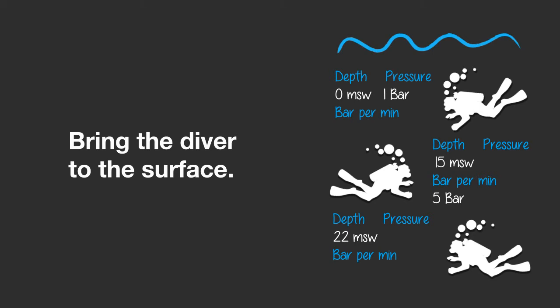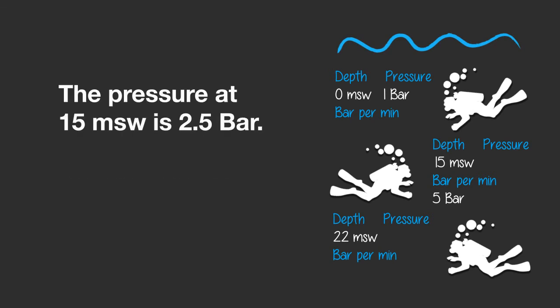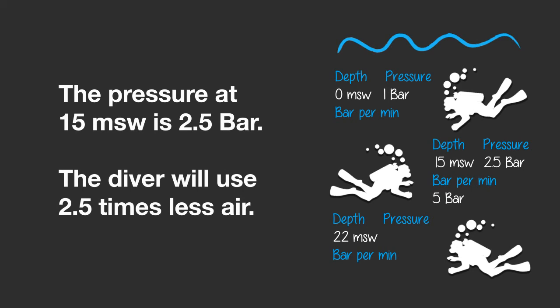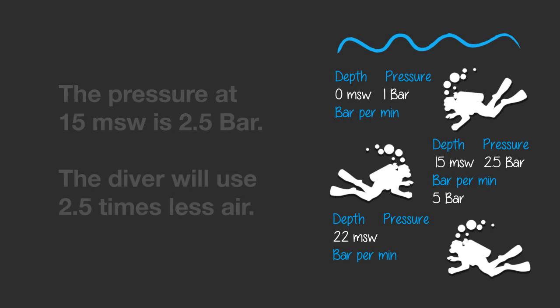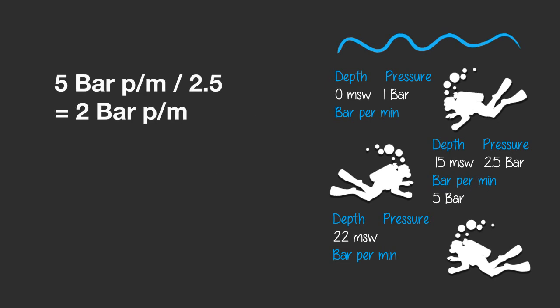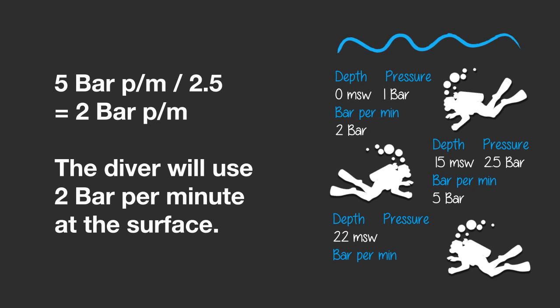First, like the balloon, we bring the diver to the surface and find out how many bar per minute he breathes there. To do this we need to know the pressure at 15 metres of seawater, which is 2.5 bar — 15 divided by 10 plus 1. The diver will use 2.5 times less air at the surface. 5 bar divided by 2.5 equals 2 bar, so he will use 2 bar per minute at the surface.